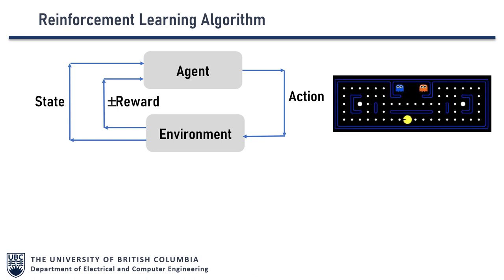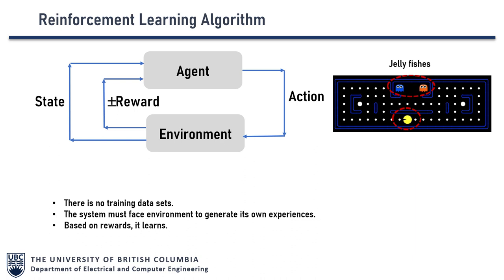To illustrate reinforcement learning, consider a video game where a yellow bubble needs to eat small dots while avoiding two dangerous jellyfishes. If we train the algorithm by letting it play hundreds or thousands of times, it will learn that whenever the jellyfishes come its way, they eat the yellow bubble. It will recognize the danger and create an optimum path to avoid them. This is how Google created AlphaGo, which can defeat any chess master in the world.